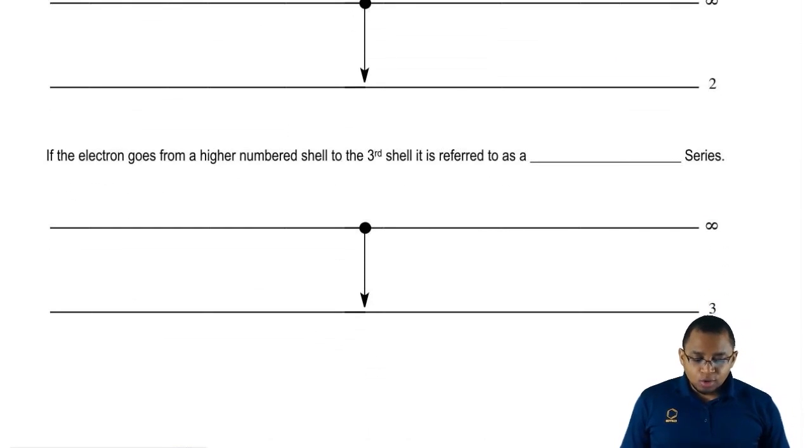Then if the electron goes from a higher numbered shell to the third shell, then it's going to be called a Paschen series. So you're going to start out at levels higher than 3, from 4 to 7. You start out at shell 6 and you go down to 3.